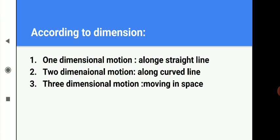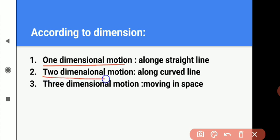Next, according to dimension, motion is classified into three categories: one-dimensional motion, two-dimensional motion, and three-dimensional motion. In one-dimensional motion, the object moves along a straight line. In two-dimensional motion, the object moves along a curved line or curved path. In three-dimensional motion, the object moves in space.